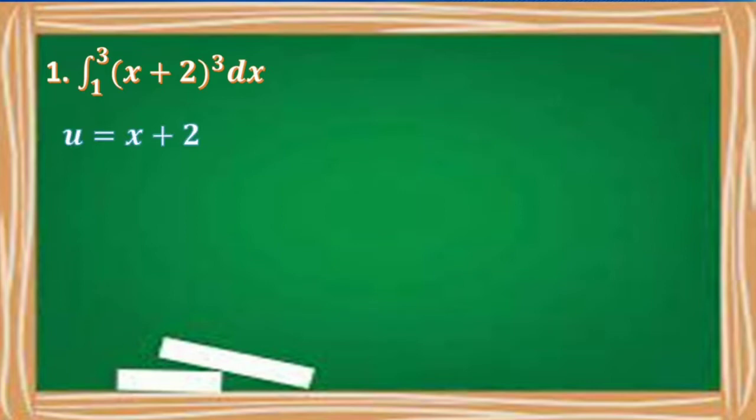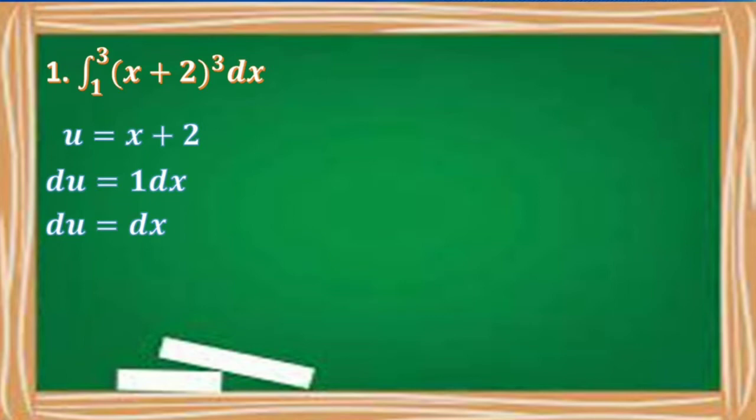We will let u equal x plus 2, and du equals 1 dx, because our variable x has a numerical coefficient of 1. So du equals dx. Our given integral now becomes the integral of u cubed du from 1 to 3.